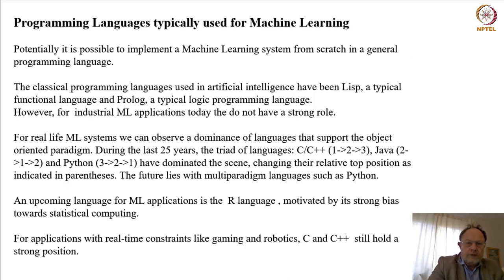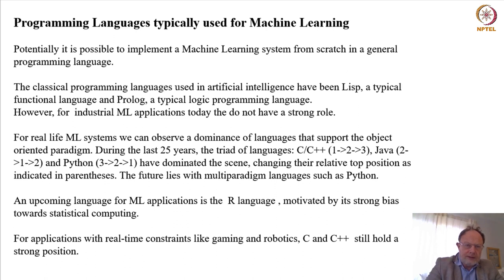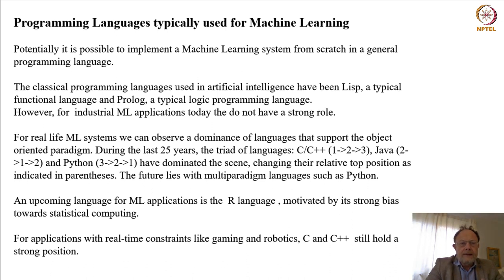Let's start with a scenario where you want to develop a machine learning system from scratch in a general programming language — the classical scenario. Which programming language should you choose? Two languages that have been used a lot in artificial intelligence for a long time are Lisp and Prolog, typical representatives for the functional style of programming. However, if we look at the situation today for industrial machine learning applications, these languages do not have a strong role.